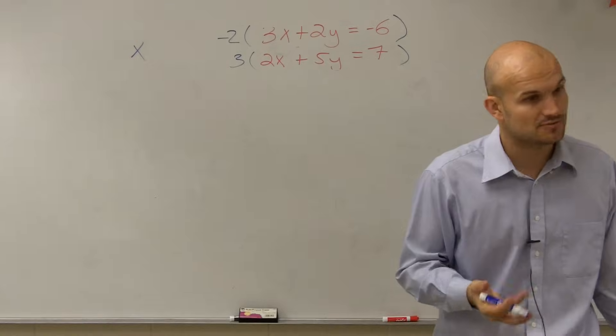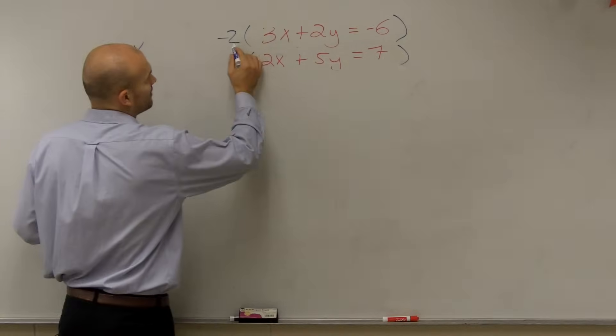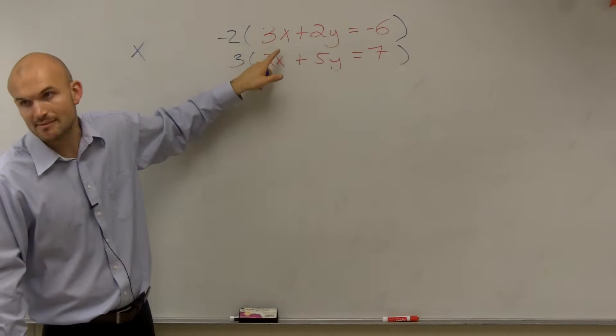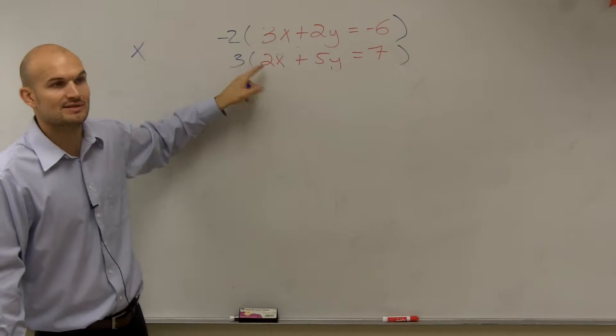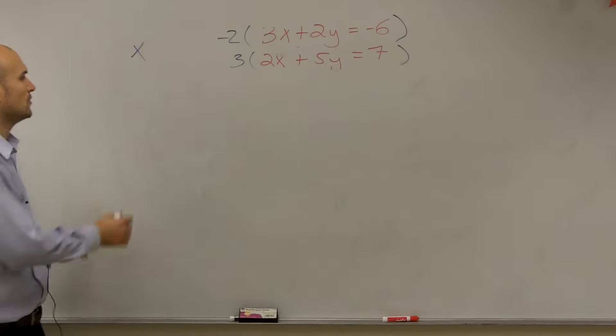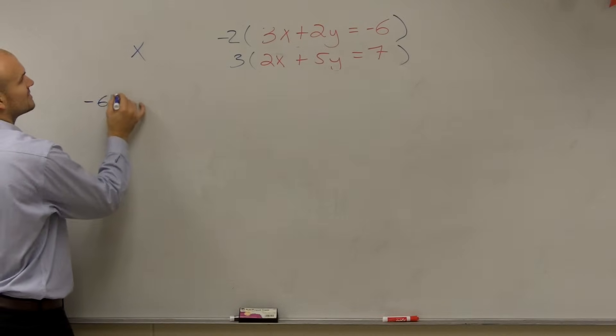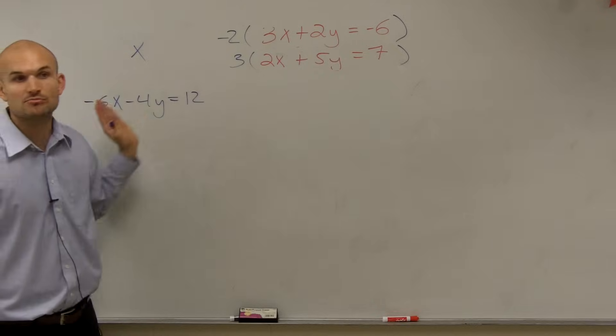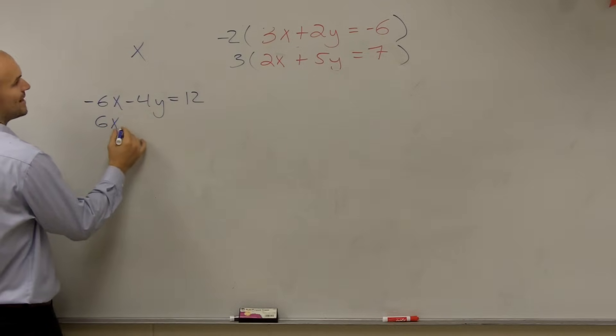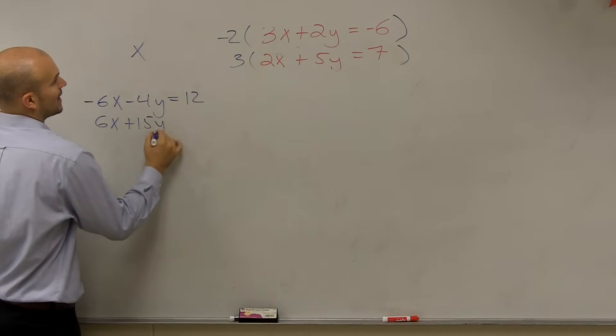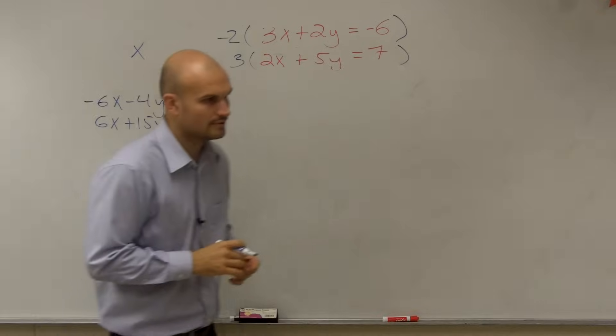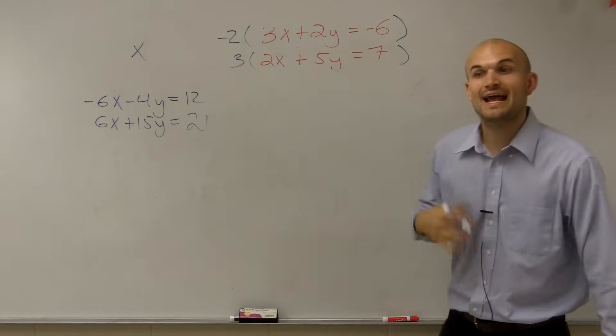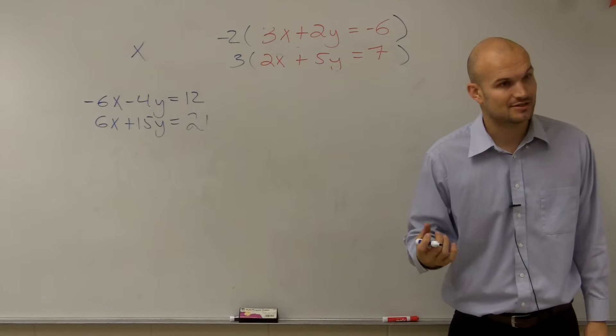However, if you want to eliminate the y variable, you can do that as well. So to eliminate the x variable, I multiply by negative 2 and positive 3. Why am I multiplying by negative 2 and positive 3? Because negative 2 times 3 is a negative 6x. Positive 3 times 2 is a positive 6x. So when I multiply everything up, I'm going to get negative 6x minus 4y equals positive 12. Right? Remember my equation. Make sure you multiply everything by your factor. 3 times 2x is now positive 6x plus 15y equals 21. You've got to multiply by everything, right? Good job.